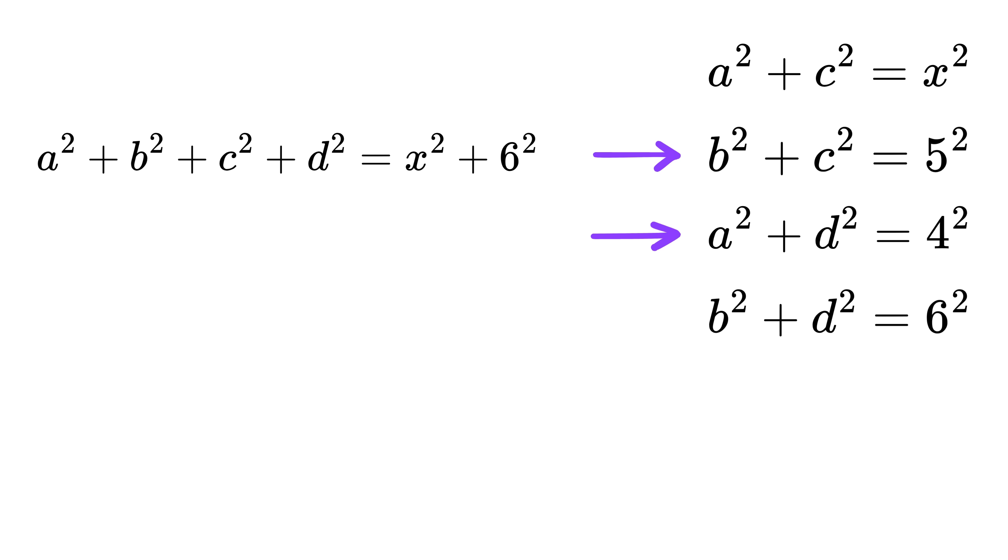Similarly, add this second and this third equation with each other. We get A square plus B square plus C square plus D square equals 4 square plus 5 square.